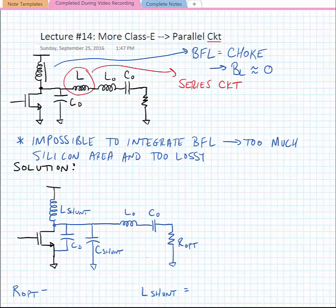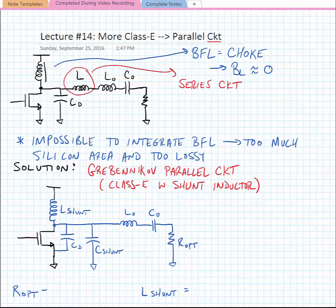So the solution was proposed by Grabennikov, and it's called the parallel circuit. Now what Grabennikov noted was that we could replace the choke inductor with a shunt inductor that had a susceptance that was non-zero, and if we tune it so that we still have our zero voltage switching behavior, then everything still works the same.